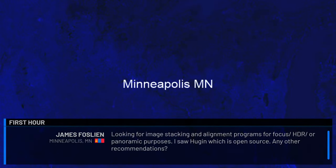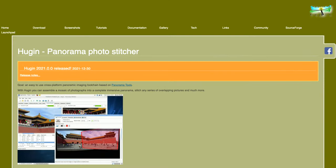Next question: James Fosslie in Minneapolis asks about image stacking and alignment programs for focus, HDR, or panoramic purposes — he saw Hugin which is open source. Alex: Hugin is a well-known open source option for stitching panoramics for video or stills. There's also PT GUI for panoramics. For focus stacking, Photoshop can do that, and to some degree HDR as well. Skylum Software makes Aurora which does HDR compiling. Those are solid options.